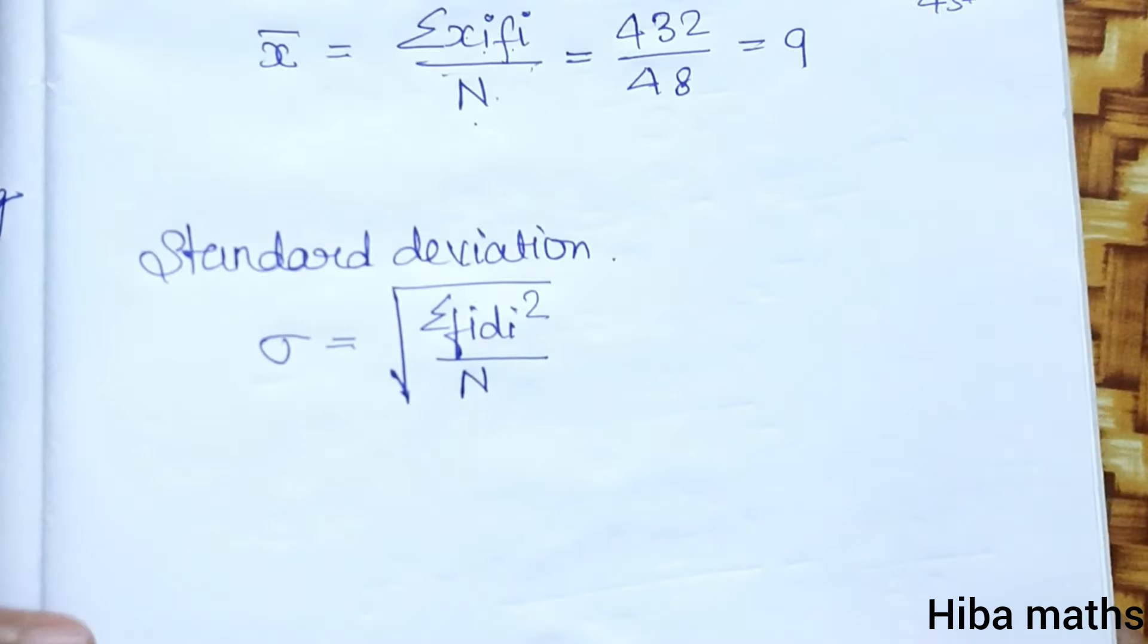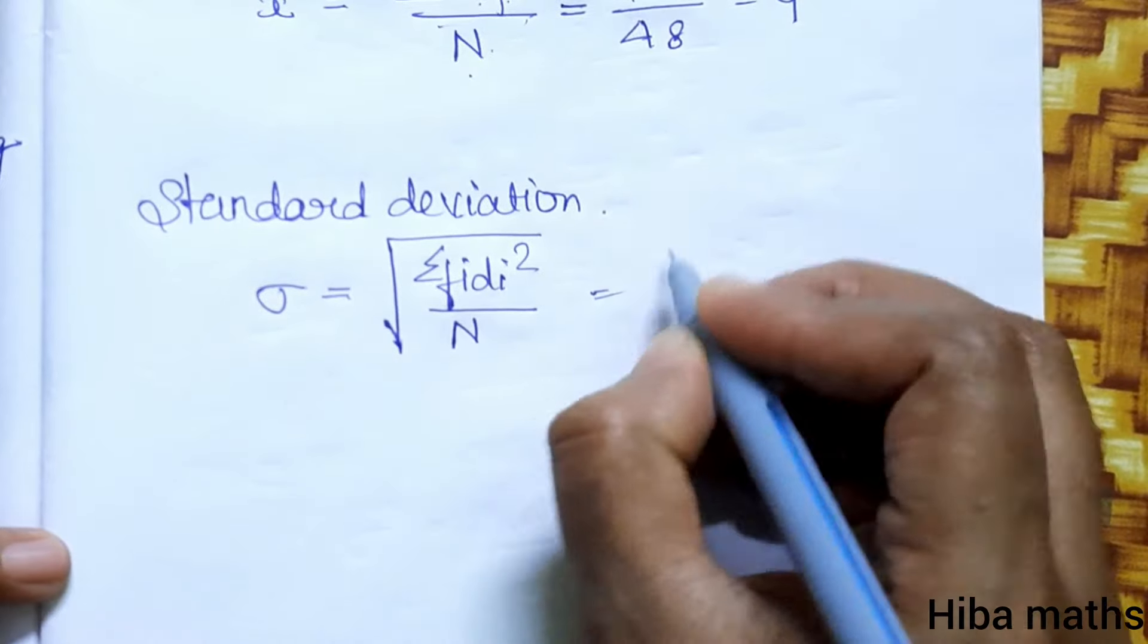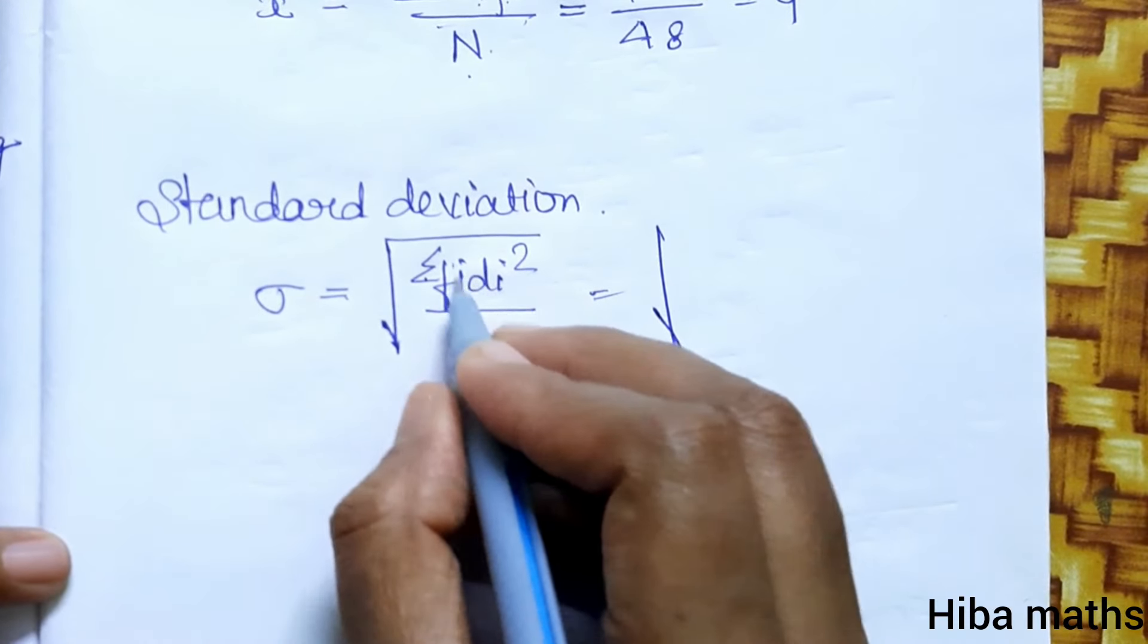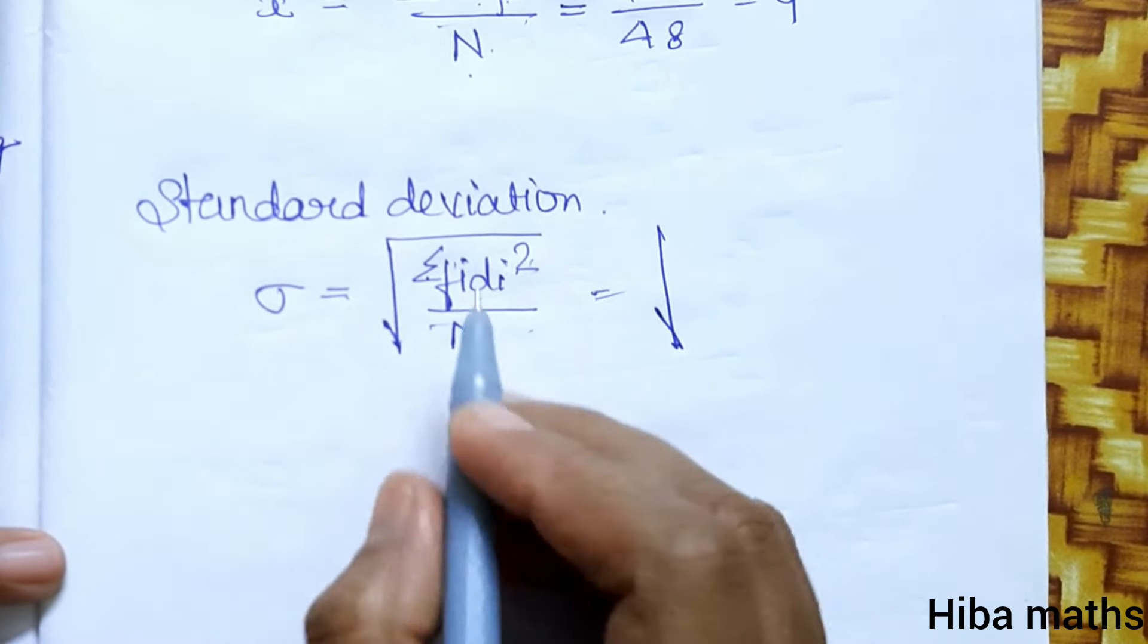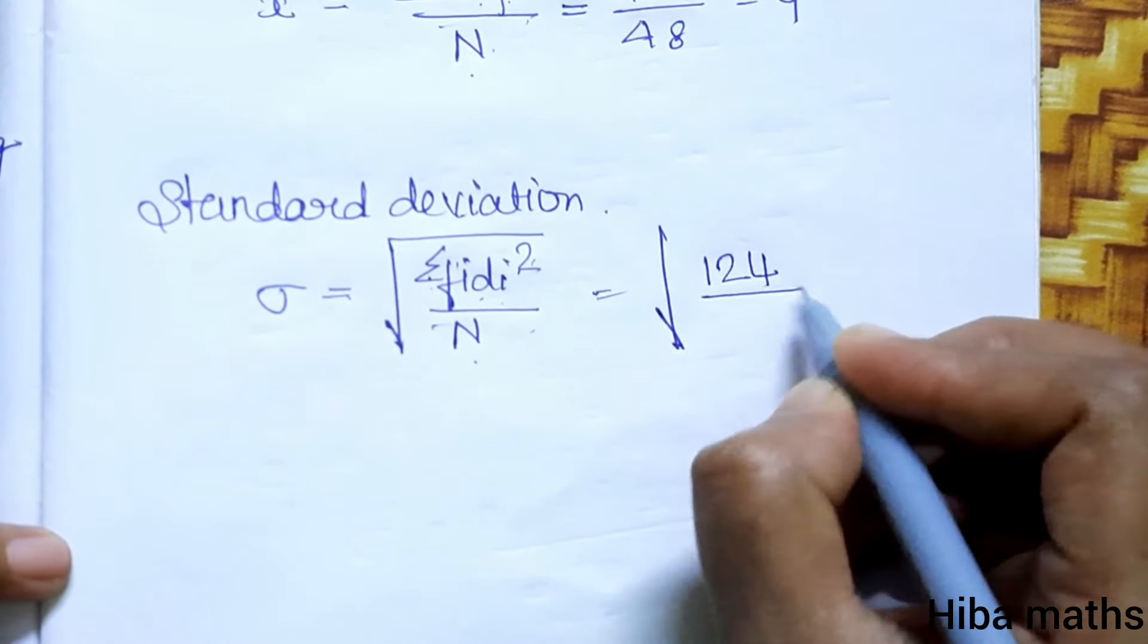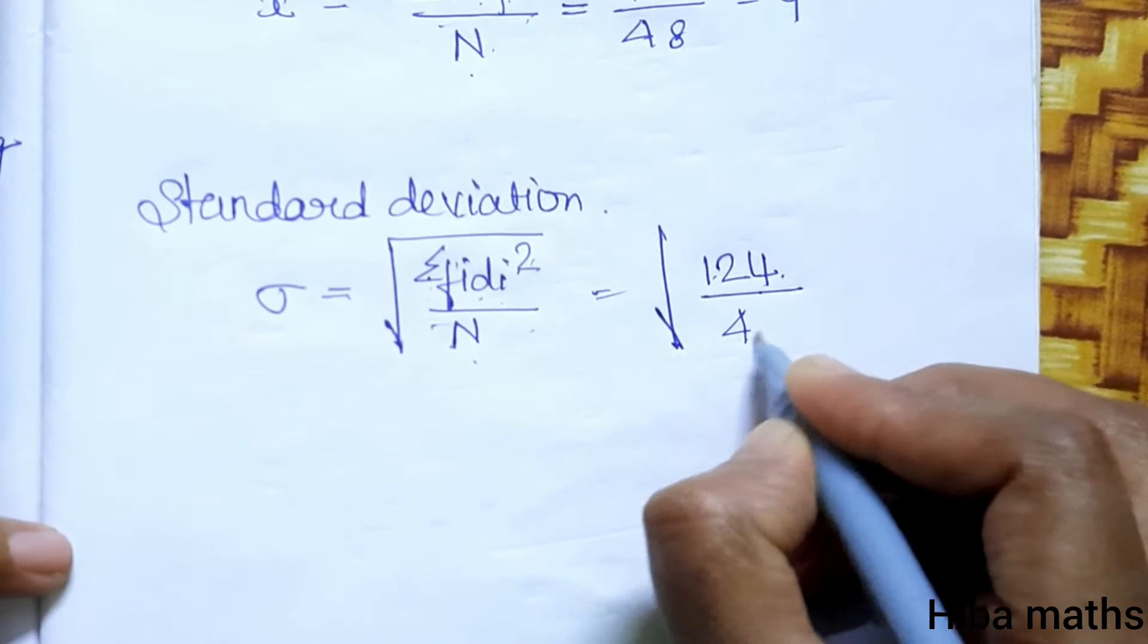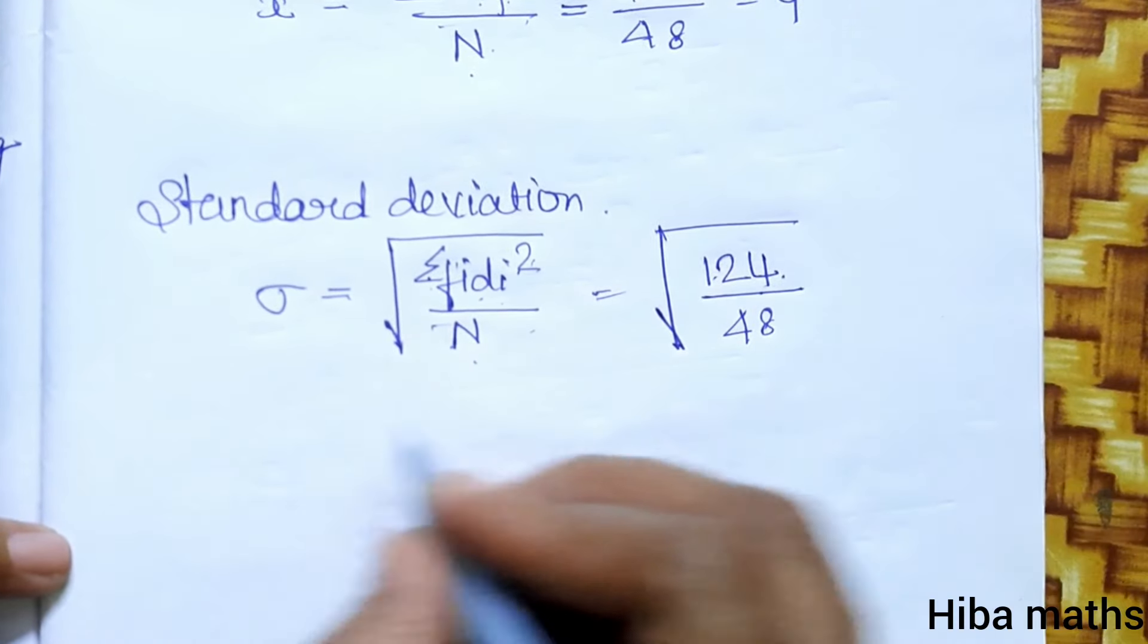This is the standard deviation. The standard deviation formula is the root of summation of fi*di² divided by N. Fi*di² is 124 divided by N, where N equals 48. Now let's divide here.